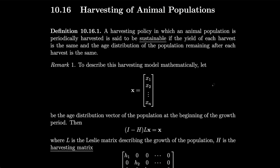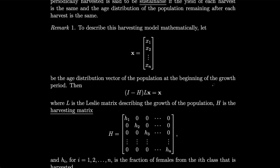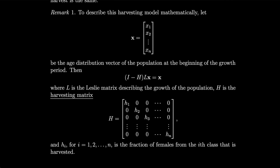Then (I minus H) times Lx equals x, where L is the Leslie matrix describing the population growth and H is the harvesting matrix — a diagonal matrix with different h-values along the diagonal — where h_i for i equals 1 through n is the fraction of females from the i-th age class that is harvested.